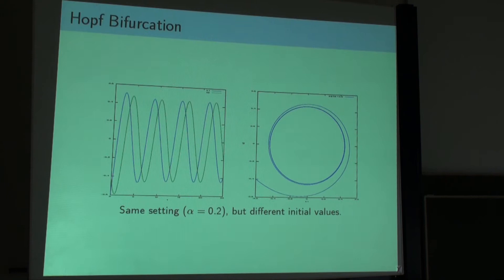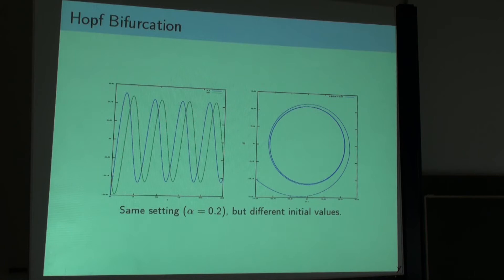What we see here is that in contrast to the linear system - for the linear system, if it is stable, meaning the real part of the eigenvalues of the matrix is negative, this leads to an exponential with a negative power, and then we have exponential decay and the solutions converge to zero. So we have one unique fixed point. But now the solution converges to such a limiting circle instead.